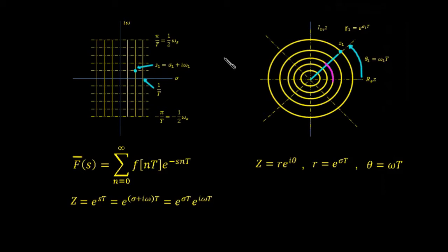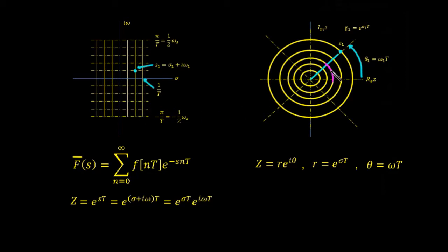The Z-transform is not a new transform as such. It's simply the discrete-time Laplace transform which has been mapped from the rectangular complex plane onto a polar version of the complex plane. The vertical lines in yellow are lines of constant sigma. The i-omega axis is the value at sigma equal to 0, and those vertical lines map to circles of constant radius R. The i-omega axis, where sigma equals 0, maps to the circle where R equals 1, shown partially in pink.